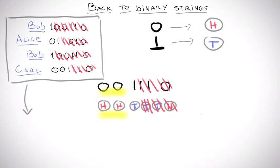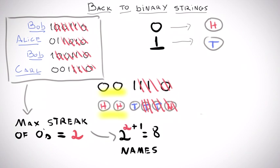So, when looking at these strings, the maximum streak of zeros we have seen so far can be also used to estimate the number of strings we have seen so far. For example, if at some point our maximum streak of zeros is 2, our guess would be that we saw 2 to the 2 plus 1 or 8 names in total, just as in the case of the coin flipping game.